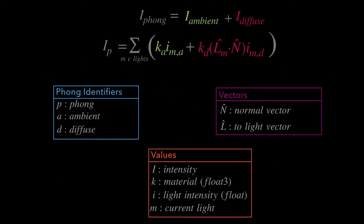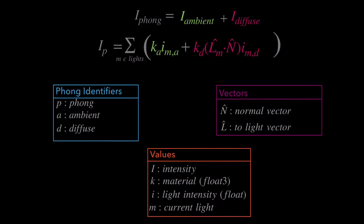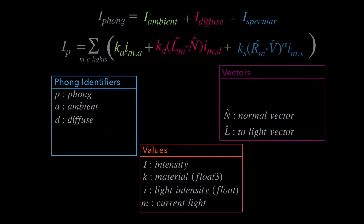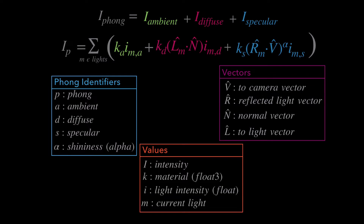Here's what we currently have with our diffuse function: ambient plus diffuse, with these Phong identifiers, vectors, and values. In this episode we're going to add specular onto this formula. For the Phong identifiers we're going to need two values: the specular value and the shininess value — that's the little alpha Greek character. The two vectors we'll be talking about are R and V: V being the to-camera vector and R being the reflected light vector.